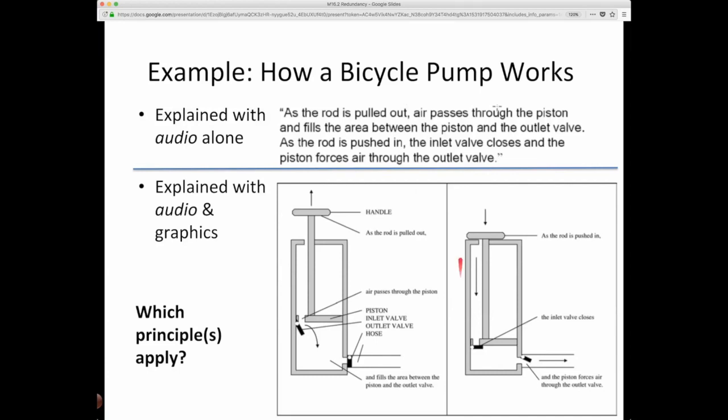So here's another example of how a bicycle pump works. As the rod is pulled out, air passes through the piston and fills the area between the piston and the outlet valve. As the rod is pushed in and the inlet valve closes, the piston forces air through the outlet valve. So this is explained in audio alone, explained with audio and graphics. What if we add the graphics? What principle is at work here? You might be tempted to jump to modality because we're talking about audio. But that's not right in this case because the contrast isn't about audio.